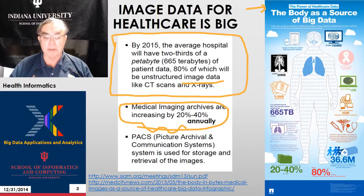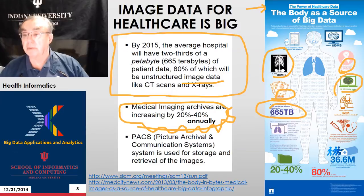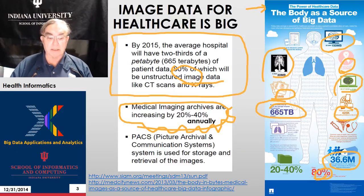This growth reflects partly the fact that images are more useful now because you can analyze them better, and also that medical devices are more powerful. We have various image sizes: around half a megabyte for some image types, 30 megabytes for others, a CT scan at a gigabyte, a mammogram at 120 megabytes, and a 3D MRI at 150 megabytes. There are 36.6 million admissions, 80% of which involve imaging, and 425,000 telehealth providers in the US. A picture archive and communications system (PACS) is used for storing and retrieval.